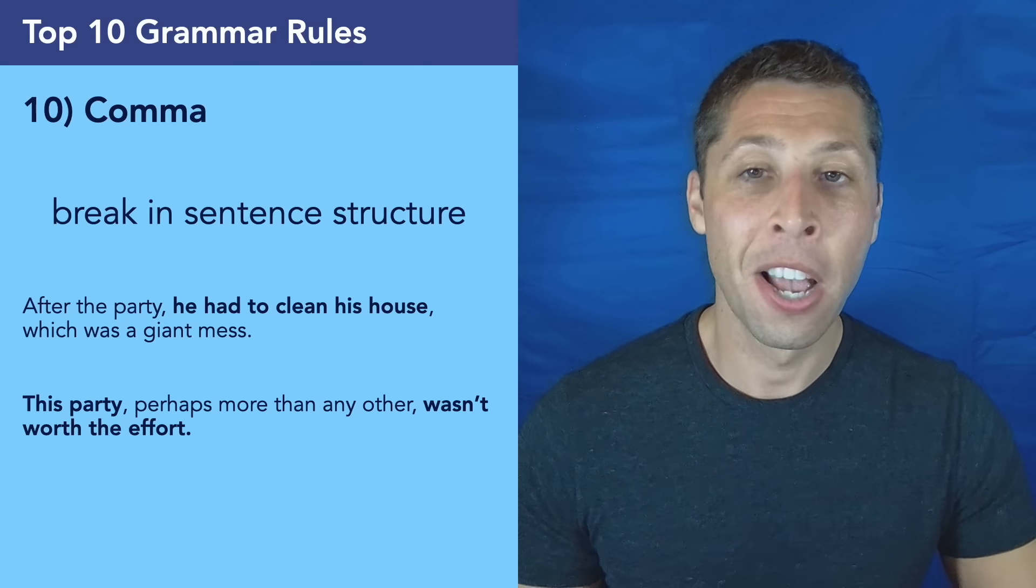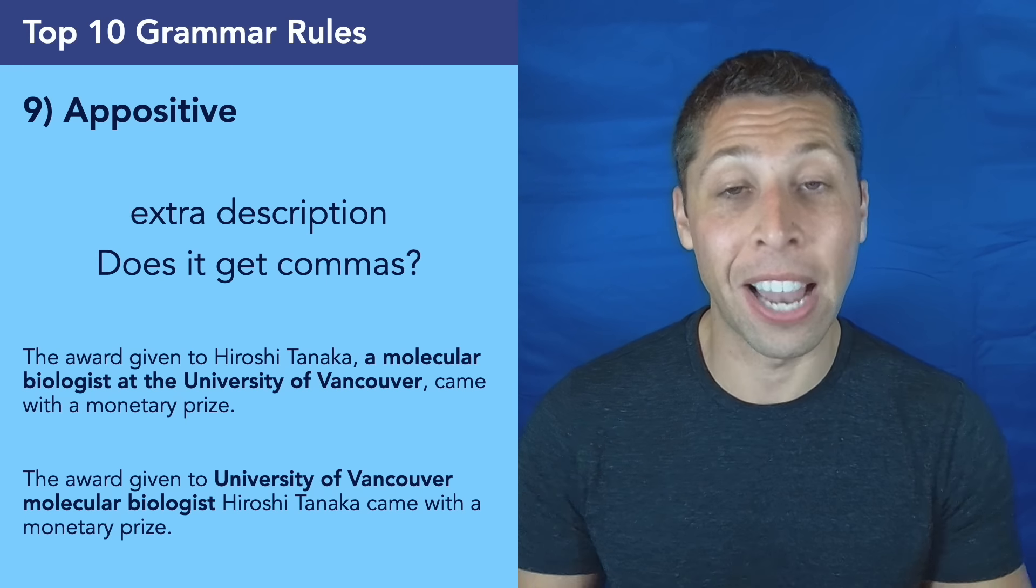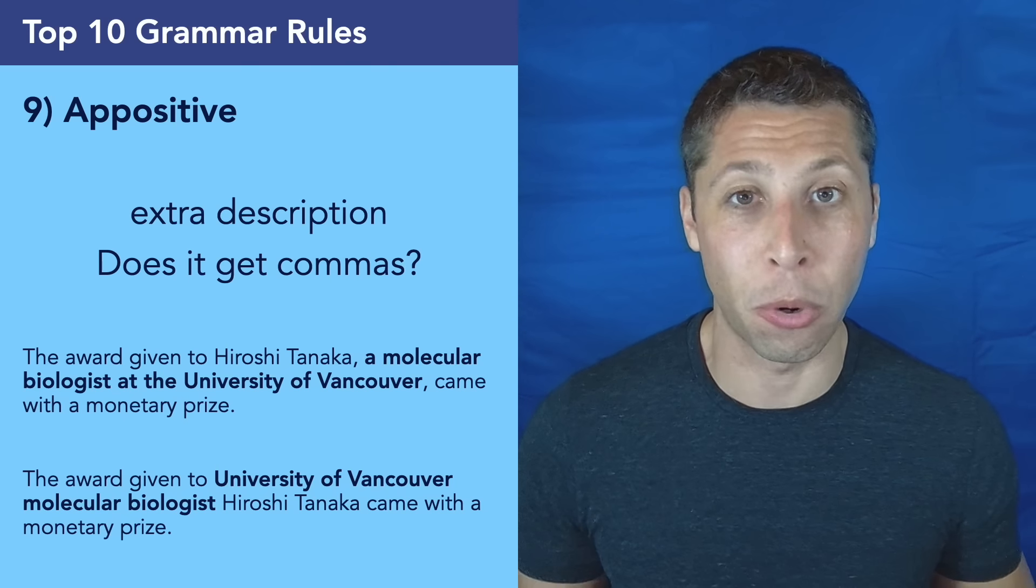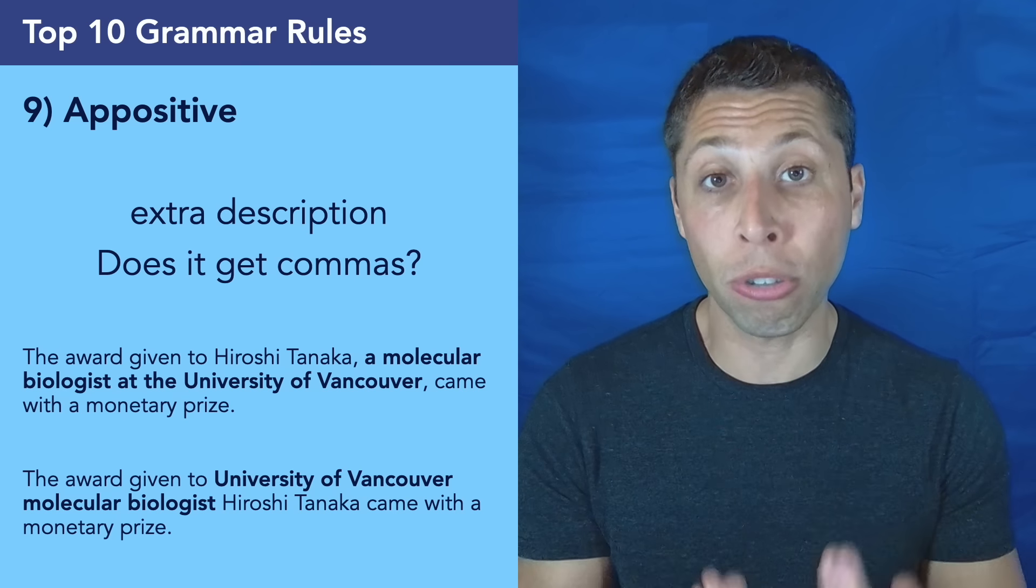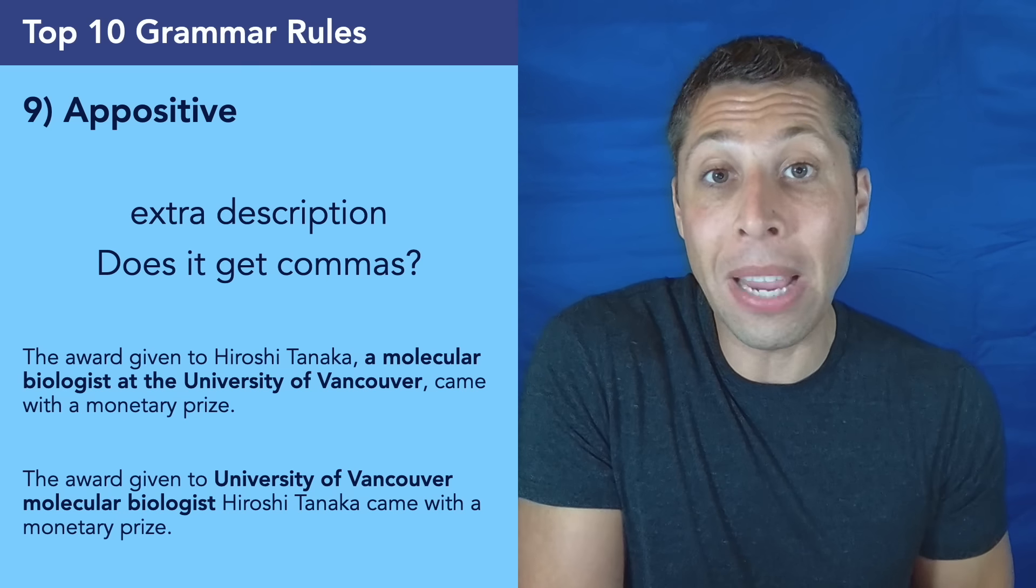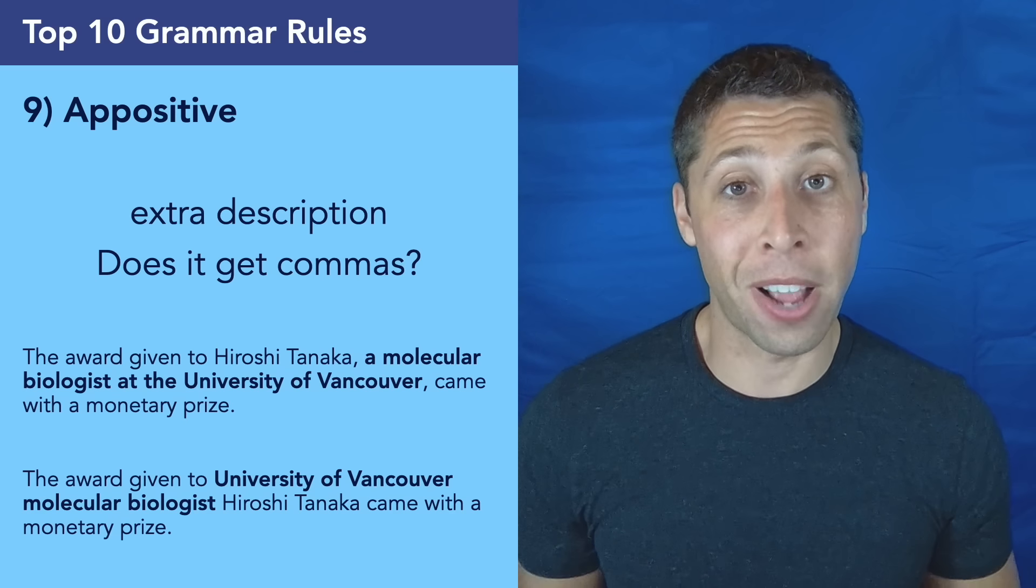One of the most difficult places to do this is with appositives. Now you know what an appositive is, even if you've never heard that word before. You definitely use this in your own writing. It's basically when we use an extra description to give us more information about the main noun in a sentence. So does it get commas or not? Well, it really depends.